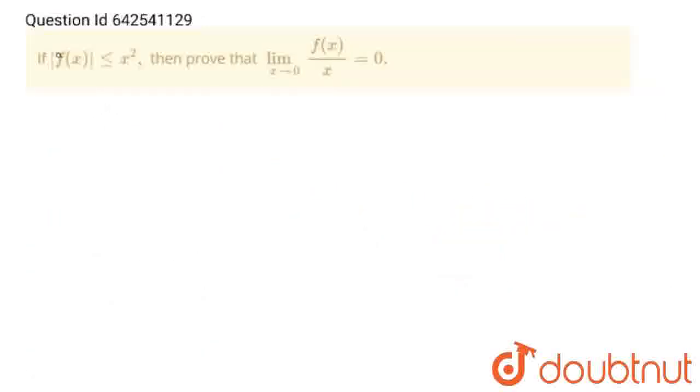Hello students, the question is: if |f(x)| ≤ x², then prove that lim x→0 f(x)/x = 0. Let's solve this problem.